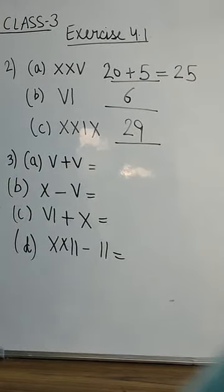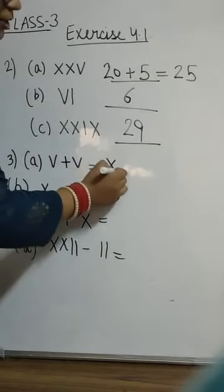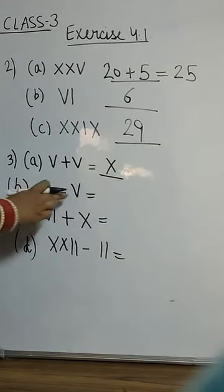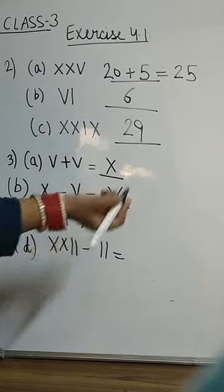What is this V plus V? 5 plus 5 will be 10. How we write 10 in Roman? X. This is 10 minus 5. Already 5. What do you mean by 5? That is V.